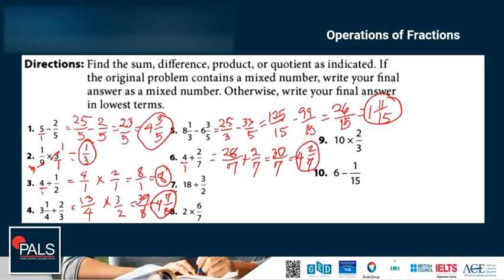Number 7. 18 can be simplified by dividing both by 3. 18 divided by 3 is 6. So 6 times 2 is 12 over 1, equal to 12.